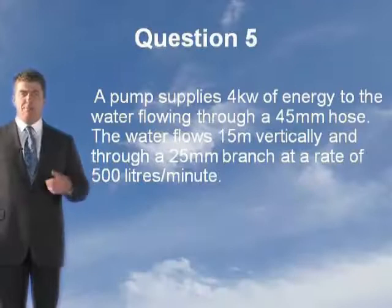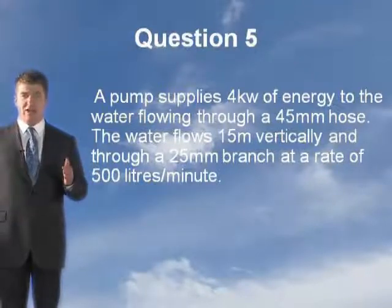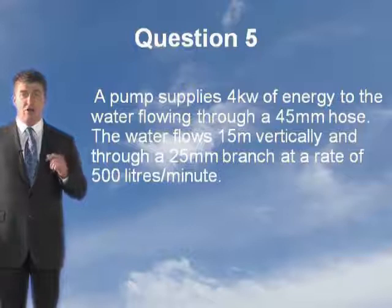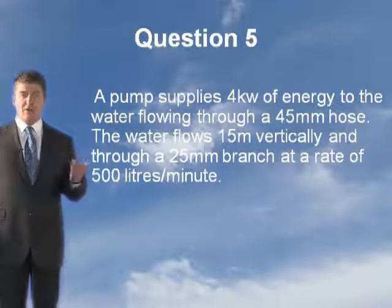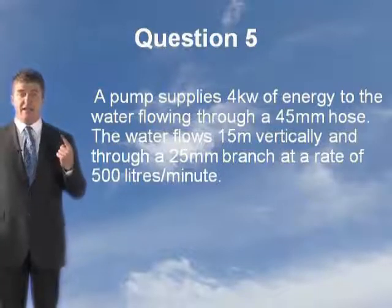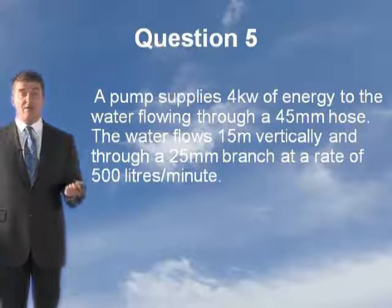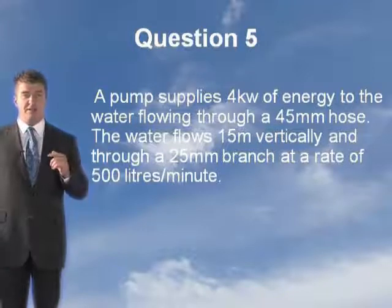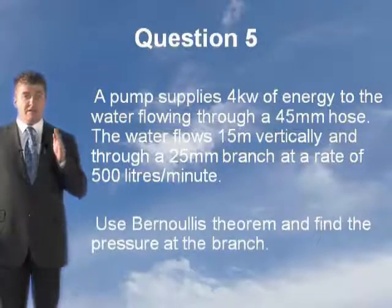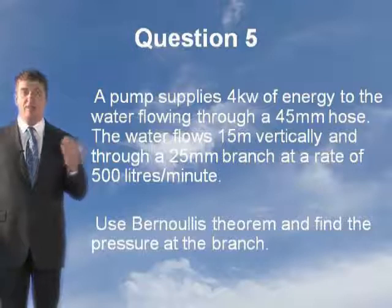Let's go through another example — Question 5. A pump supplies four kilowatts of energy to the water flowing through a 45 millimetre hose. The water flows 15 metres vertically and through a 25 millimetre branch at a rate of 500 litres a minute. Use Bernoulli's theorem and find the pressure at the branch.